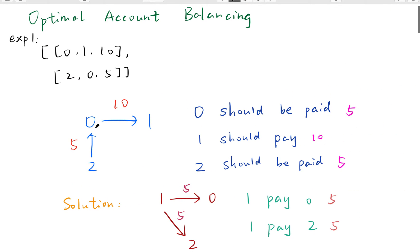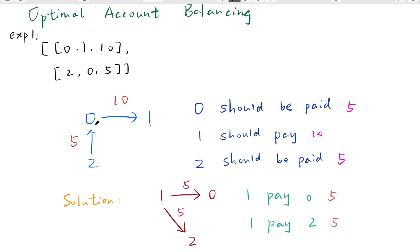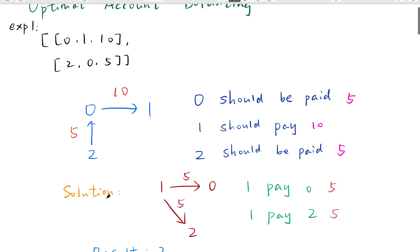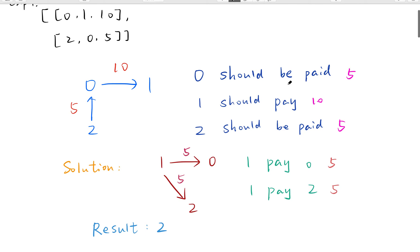Let's write the graph. That means 0 gave Y Z dollars, and 2 gave 0 five dollars. So in total, 0 should give out five dollars and should be paid five dollars to be settled up. For person 1, he was given ten dollars, so he should pay ten dollars to be settled up. For person 2, he gave out five dollars, so he should be paid five dollars. You will find that all the amounts to be paid, if we sum up, equal the sum of all the amounts that should pay — five plus five equals ten.